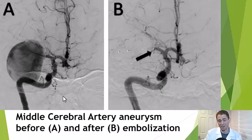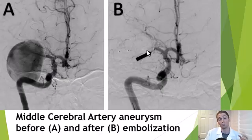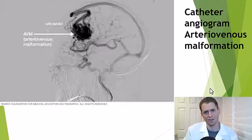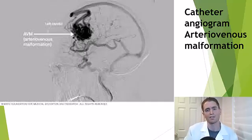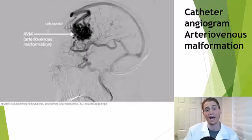Some incidentally discovered small aneurysms have a lower risk of rupture, but this is a very large high-risk aneurysm. An embolization was performed where foreign material was introduced to block off the aneurysm, hopefully eliminating the risk of rupture. Here's a catheter angiogram showing an arteriovenous malformation — if you look at the full image sequence, you would see the dye entering the arteries, then the AVM, then directly entering the veins without going through an intermediary capillary bed.